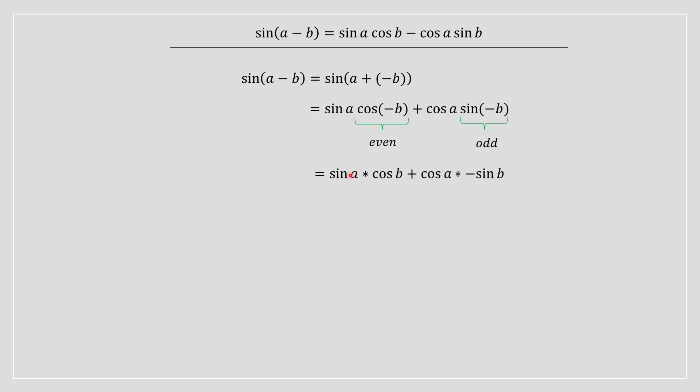So then we can rewrite it as sine of a multiply cos of b plus cos of a times negative sine of b. Once we rewrite it in a more familiar format as you can see, we have basically proved the subtractive identity for the sine function.